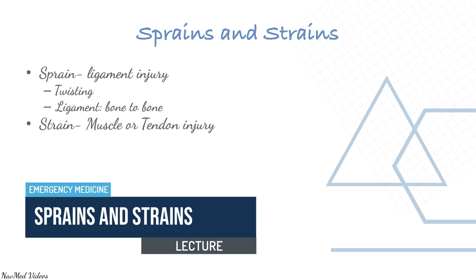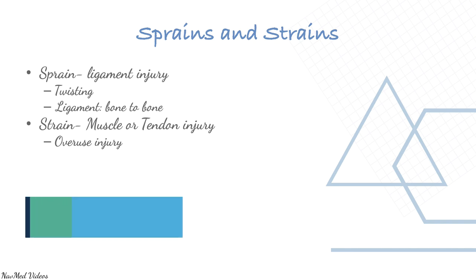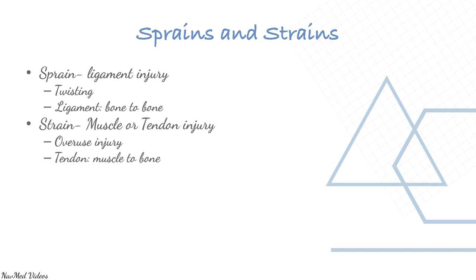A sprain is a ligament injury — ligaments attach bone to bone. A strain, with a T, is a muscle or tendon injury. A tendon is a structure that attaches muscle to a bone. Ligament injury is a sprain; muscle or tendon injury is a strain.